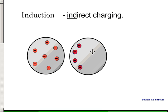This causes the electrons in the atoms of the neutral object to actually be pushed to the opposite side of the sphere.